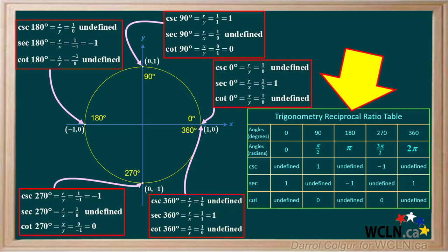Here's a summary of the reciprocal trigonometric ratios for the five angles we considered here, and how all these values are obtained from their coordinates. Make sure to review these until you're confident that you can determine all the values on your own.